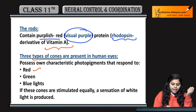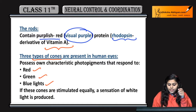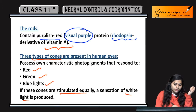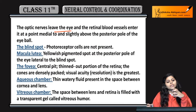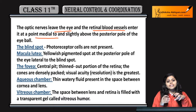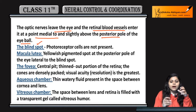There are three types of cones present in the human eye: red, green, and blue. If red, blue, and green light come together and are stimulated equally, they will produce white light. The optic nerve leaves the eye and retinal blood vessels enter at a point medial to and slightly above the posterior pole of the eyeball — this region where nerves leave is called the blind spot.